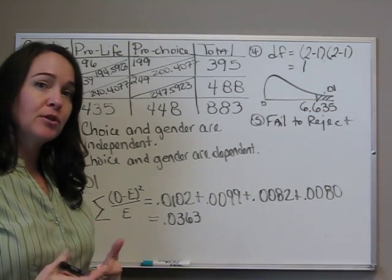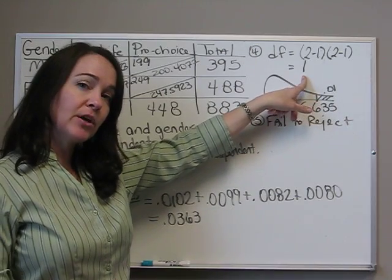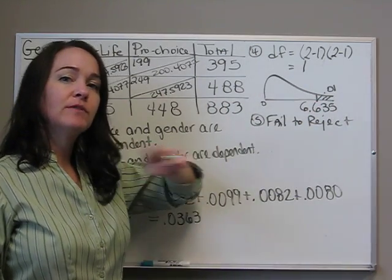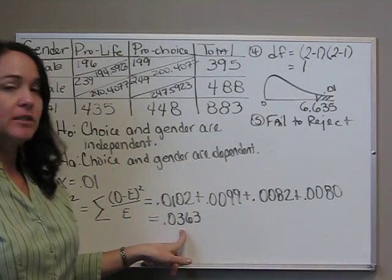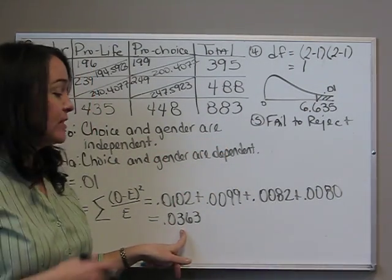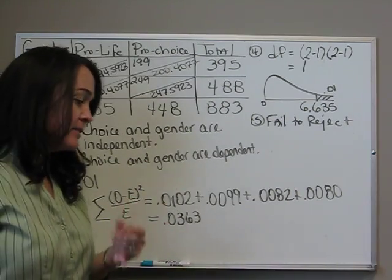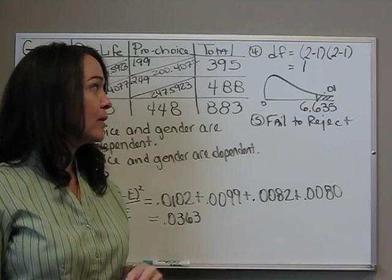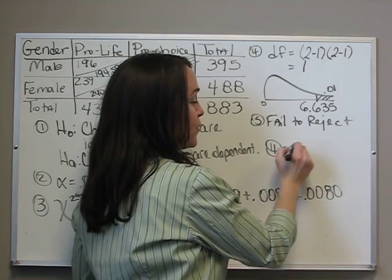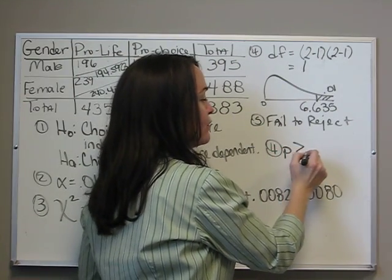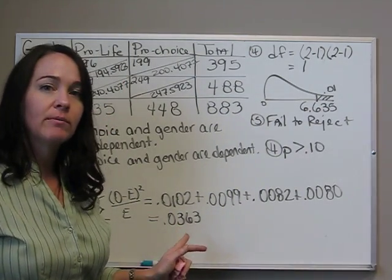If we were to do the p-value approach, again, we look at degrees of freedom of one. We go to our table on the row of degrees of freedom of one, and we try to find the number that's closest to 0.0363. We see that there's none of them that will be that small. The smallest one has an area of 0.10 in the tail. So all we can say with our p-value of our fourth step is that p is greater than 0.10. The probability of this occurring is greater than 0.10.